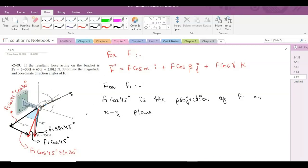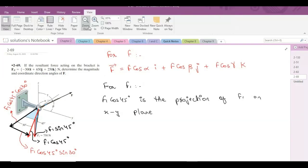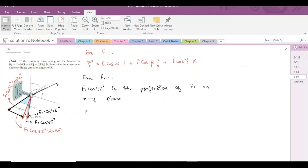So let us write this F1 force in terms of Cartesian vector form. F1 is equal to the x component, that is F1 cos 45 cos 30 i plus F1 cos 45 sin 30 j minus F1 sin 45 k.